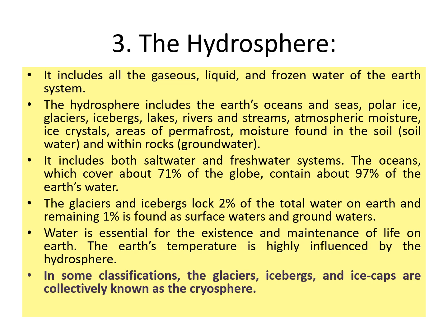The next sphere is the hydrosphere. It includes all gaseous, liquid, and frozen water on the Earth system — oceans, seas, polar glaciers, icebergs, lakes, rivers, streams, as well as moisture and water vapor present in the soil. It includes salt water as well as fresh water systems. Glaciers and icebergs lock about 2% of the total fresh water on the Earth, and the remaining 1% is found as surface water and groundwater. Water is an essential source for the existence and maintenance of life, and Earth's temperature is also greatly influenced by the presence of water.